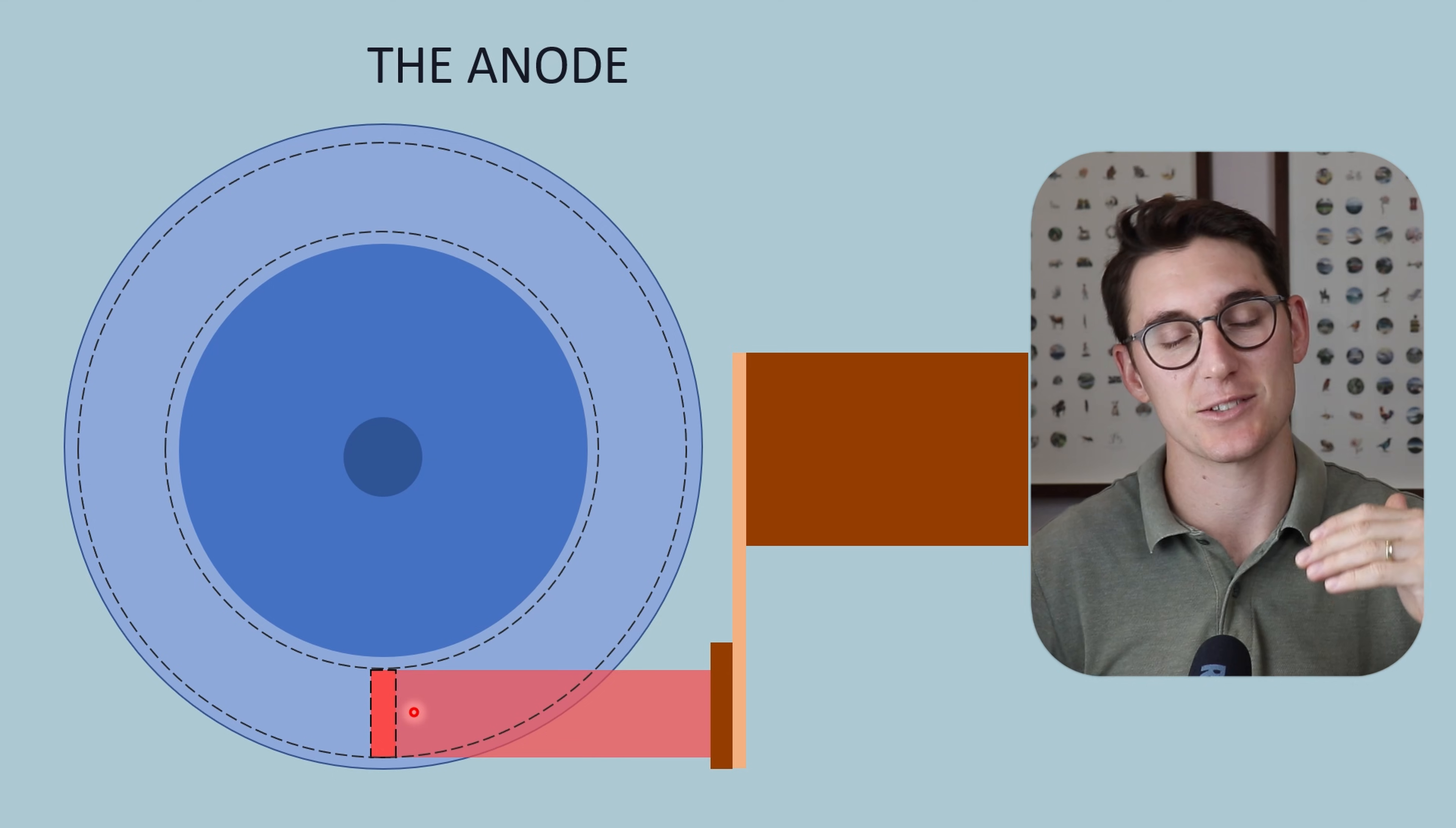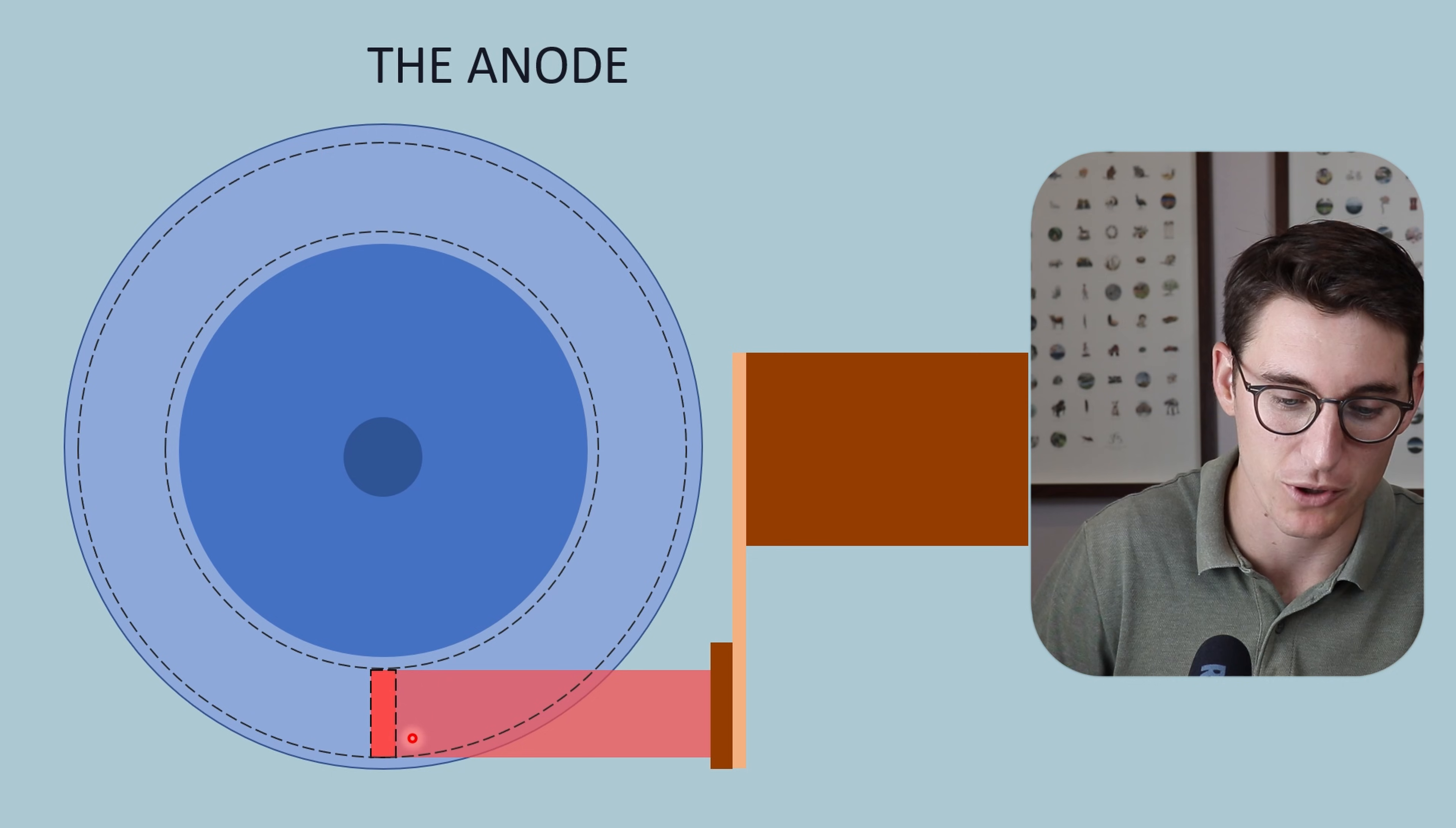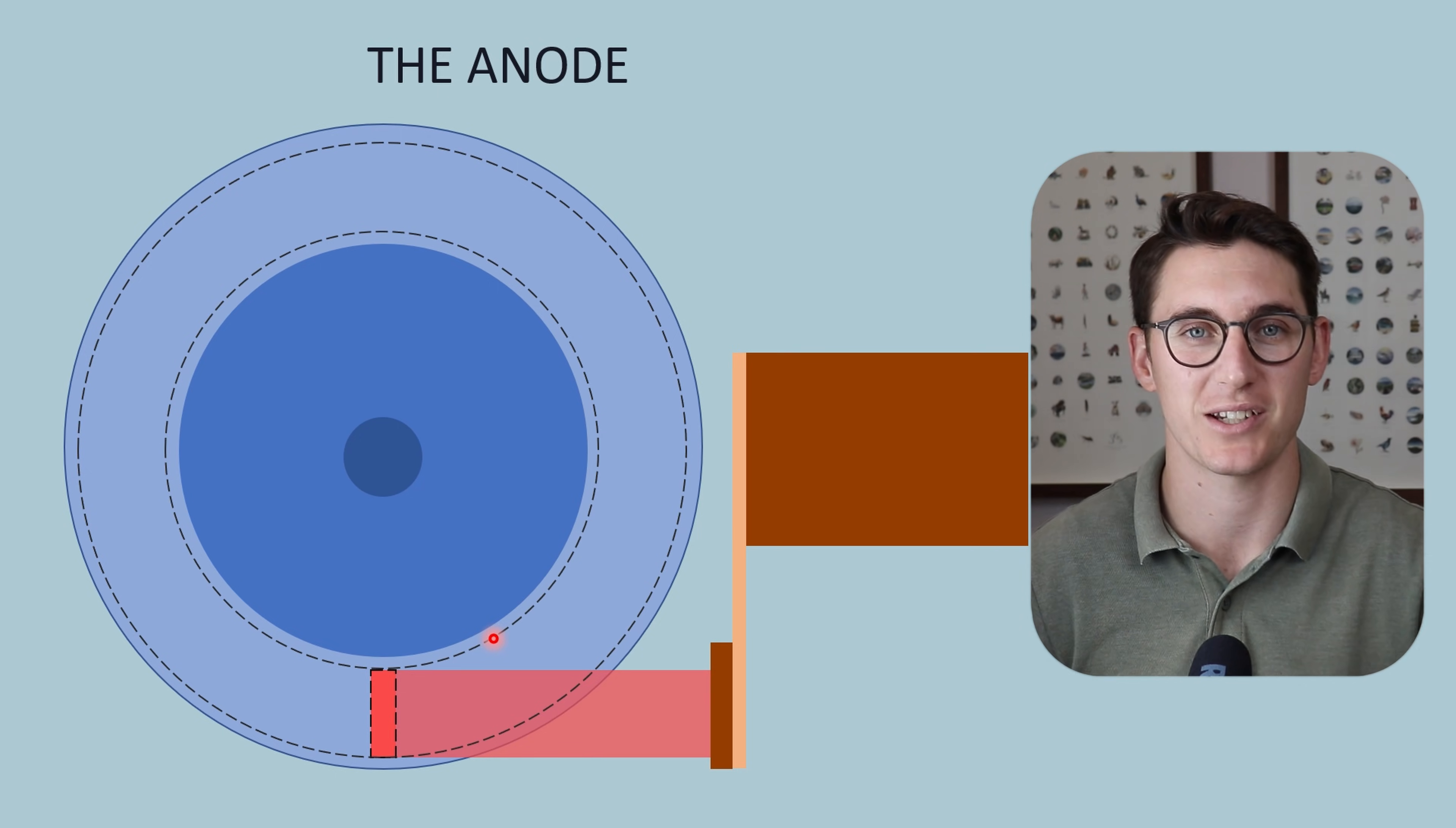The main way that heat is moved away from the anode is by radiation. There are a couple of heat transfer mechanisms—radiation, conduction, and convection. The vast majority of heat moving away from the actual focal spot is done by radiation. Radiation is electromagnetic radiation, falling just above visible light, in the infrared wavelength of our electromagnetic spectrum.